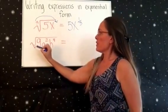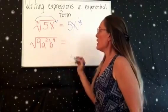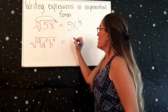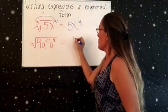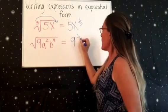Here's another problem where you have square root of 9a squared b to the 4th. So when you don't have a number there, that's like saying it's a 2. So we're going to take the 9 and we're going to put one-half next to it.